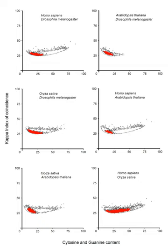In bacteria, the promoter contains two short sequence elements approximately 10 and 35 nucleotides upstream from the transcription start site. The sequence at −10 has the consensus sequence TATAAT. The sequence at −35 has the consensus sequence TTGACA. These consensus sequences, while conserved on average, are not found intact in most promoters. On average, only three to four of the six base pairs in each consensus sequence are found in any given promoter.